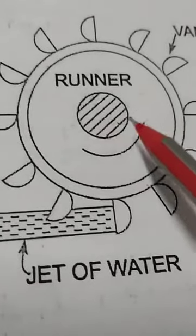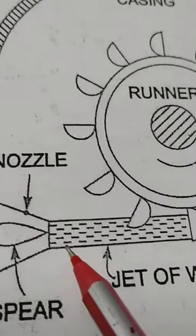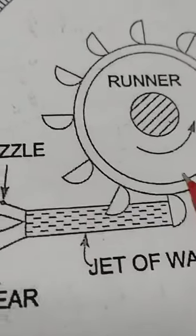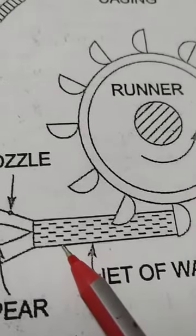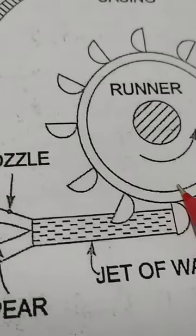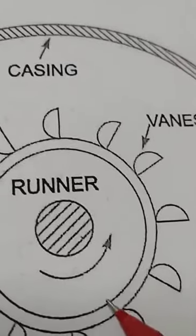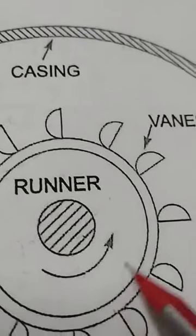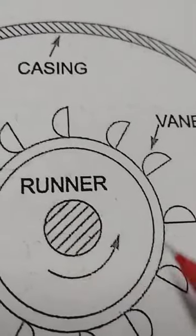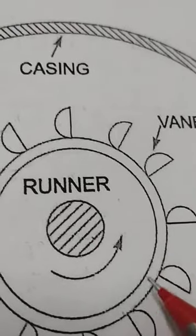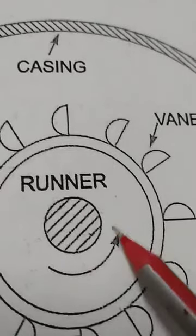Now I will explain the three efficiencies one by one. The first is hydraulic efficiency: water power is converted to runner power. The first is always input and the second is output. The ratio of runner power to water power is called hydraulic efficiency. For mechanical efficiency, the ratio of shaft power to runner power — shaft power is output, runner power is input — is called mechanical efficiency.